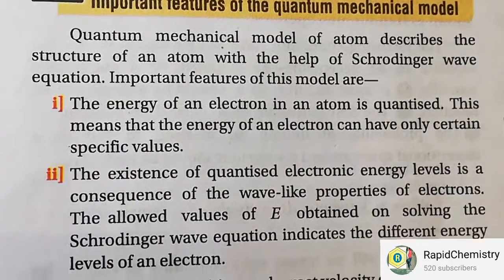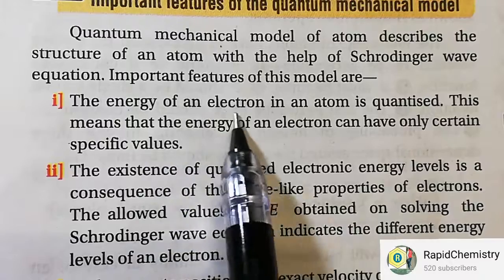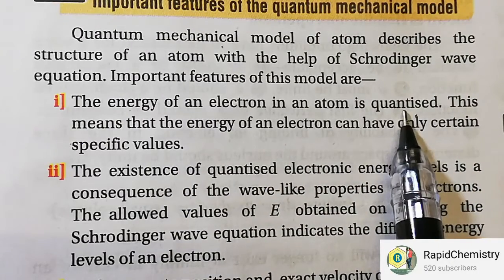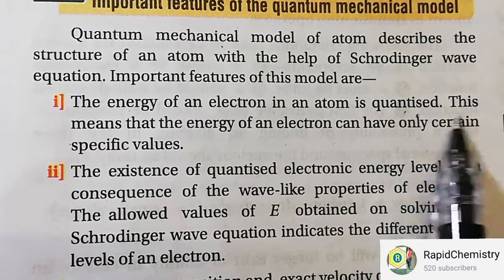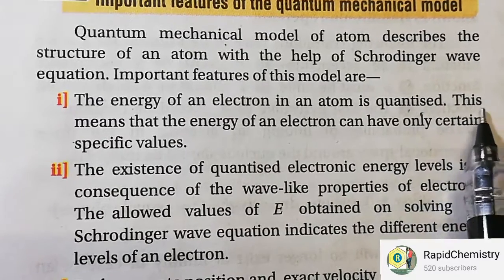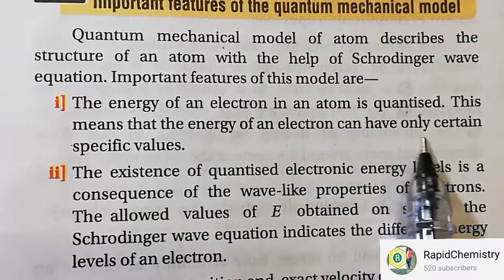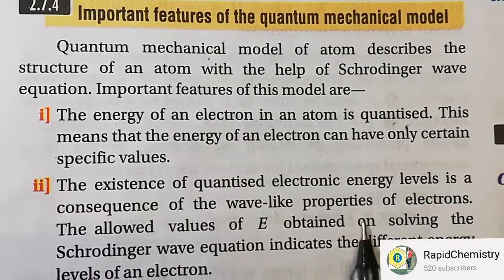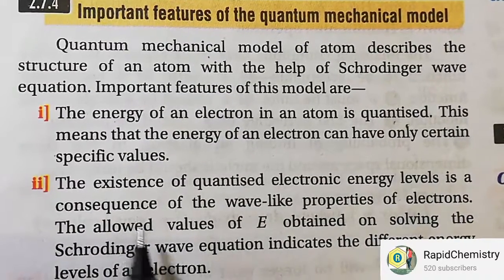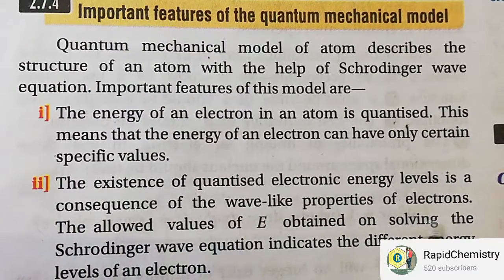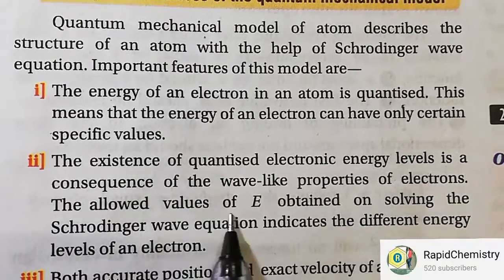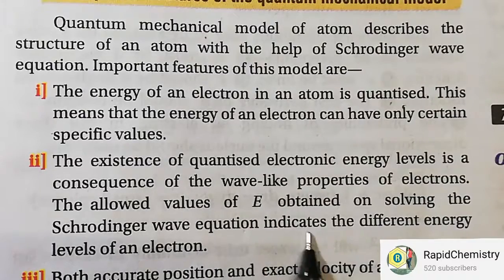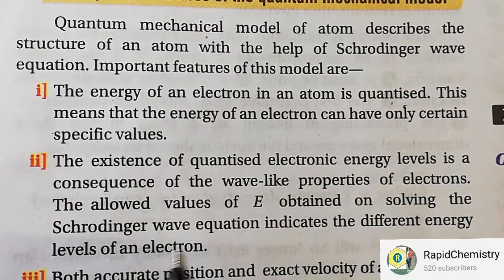The quantum mechanical model of an atom describes the structure of an atom with the help of the Schrödinger wave equation. Important feature number one: the energy of an electron in an atom is quantized, meaning the energy of an electron can have only certain specific values. Number two: the existence of quantized electronic energy levels is a consequence of the wave-like properties of electrons. The allowed values of E obtained by solving the Schrödinger wave equation indicate the different energy levels of an electron.